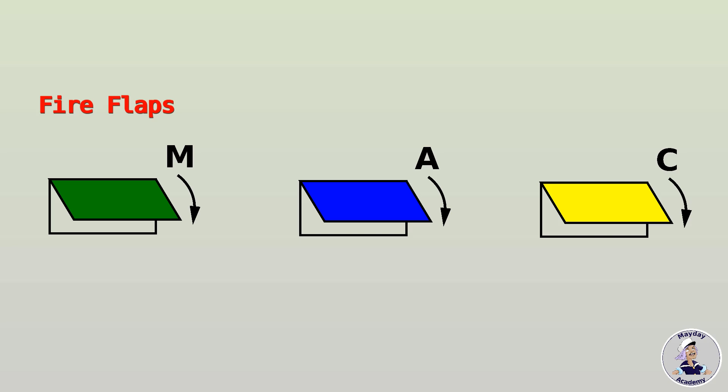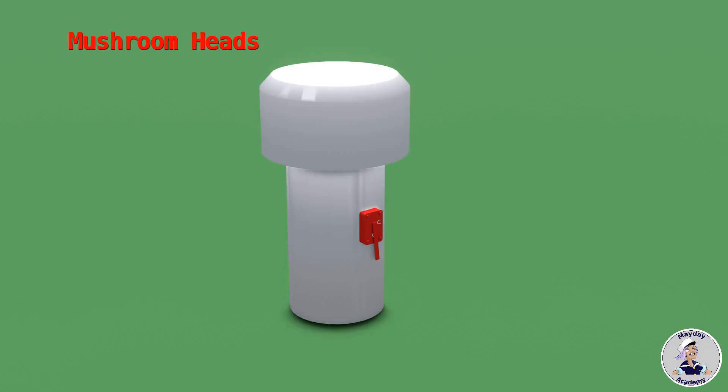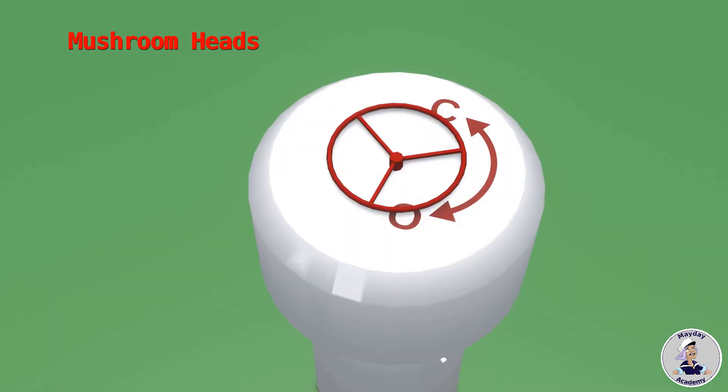Flaps are indicated by this icon and color-coded in the same way as the icons used for dampers. Mushroom heads on deck are fitted with closing devices operated by levers or wheels. All closing devices must clearly be marked with an indication showing their open and close position, usually indicated with the letters O and C or the words open and close.